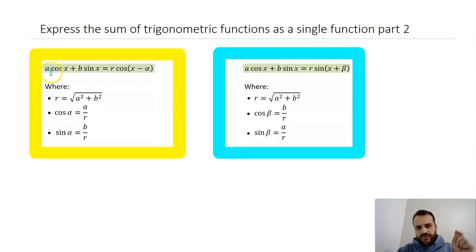So if you have a cosine function and a sine function, you can add them together to make a single cosine function, where r is a squared plus b squared, and cos alpha is equal to a over r, and sin alpha is equal to b over r. You can also add together the same functions, a cos x plus b sine x, and get r sine x plus beta instead, and where all of that is also true.